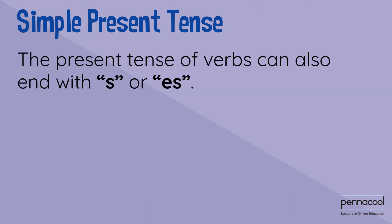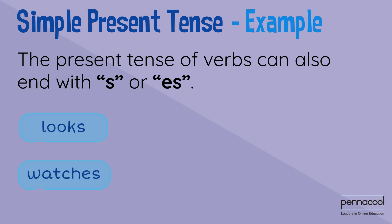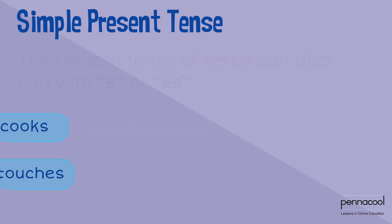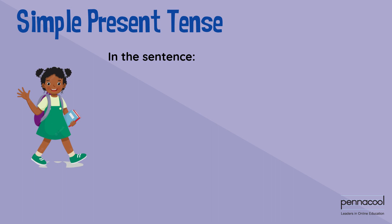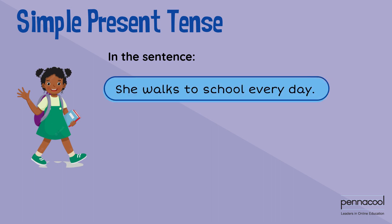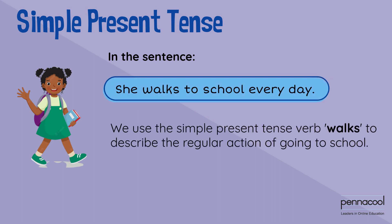The present tense of verbs can also end with s or es. Some examples are looks, watches, cooks, and touches. In the sentence 'she walks to school every day,' we use the simple present tense verb 'walks' to describe the regular action of going to school.